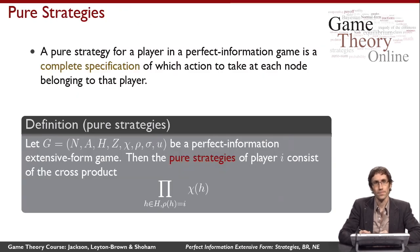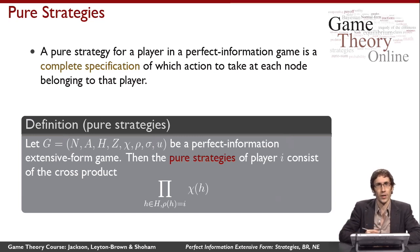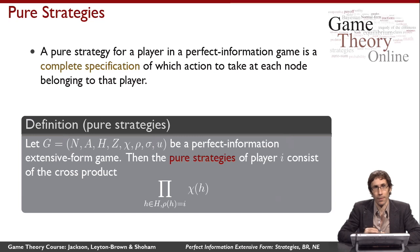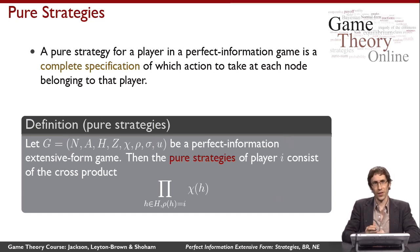Generally speaking, a pure strategy for a player in a perfect information game completely specifies how that player would play the game for anything that could happen — specifically, what actions to take at every choice node where that player makes a decision. Intuitively, think of pure strategies in terms of giving proxy instructions to another person to play the game for you. Player two would need to tell her friend everything that might ever be needed to play properly, specifying what to do at every choice node her friend might encounter.